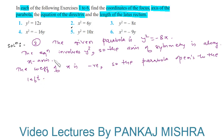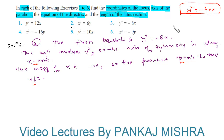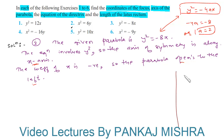The equation of a parabola which is symmetric along the x-axis and opens to the left is given by y² = −4ax. On comparing these two equations, we see that −4a = −8, so a = 2. The focus of such a parabola is at (−a, 0), and the axis of the parabola is y = 0.